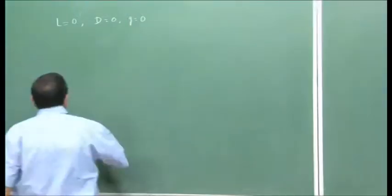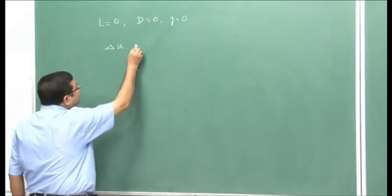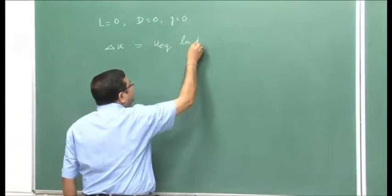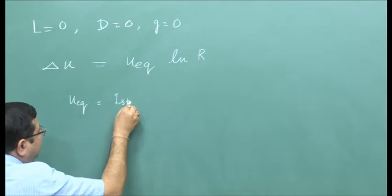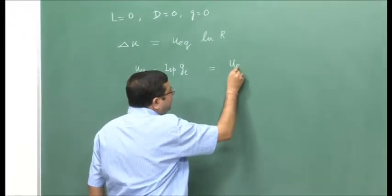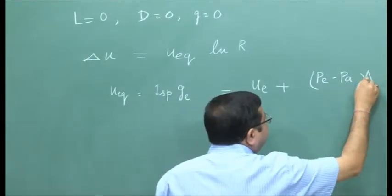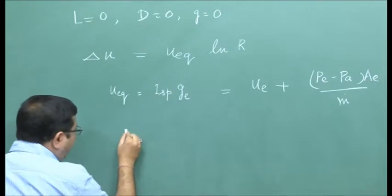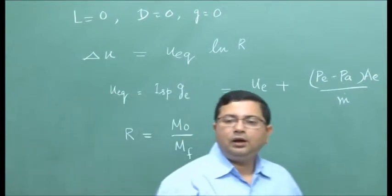For this case, we derived that the velocity increment delta u for the rocket vehicle is given as the equivalent velocity of the exhaust times ln(r), where the equivalent velocity is the specific impulse times acceleration due to gravity, or equal to the actual exhaust velocity plus the pressure term. We proved this, and r is the initial mass divided by the final mass of the rocket vehicle.